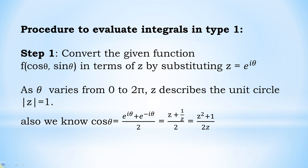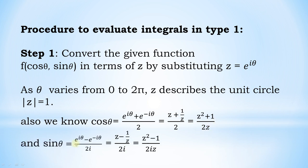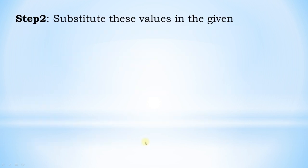We know cos θ = (e^(iθ) + e^(−iθ)) / 2. Since e^(iθ) = z and e^(−iθ) = 1/z, this gives cos θ = (z + 1/z) / 2 = (z² + 1) / (2z). Also, sin θ = (e^(iθ) − e^(−iθ)) / (2i) = (z − 1/z) / (2i) = (z² − 1) / (2iz).